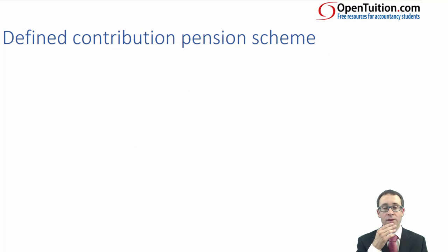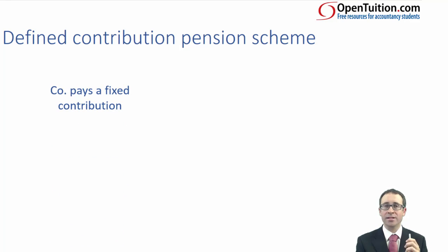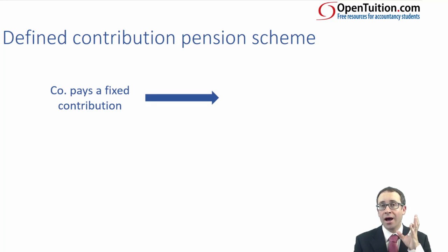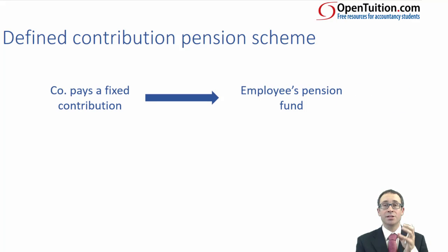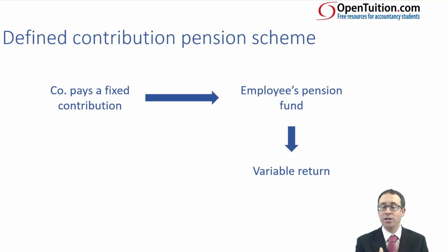Let's look at the defined contribution pension scheme first — also referred to as money purchase. If you think about it as a defined contribution, it's very literal. What goes into the pension scheme is a defined contribution, a fixed amount. The company pays a fixed contribution monthly, and that goes into your employee's pension fund. You find a pension provider in your country, and your company pays an amount into that fund.